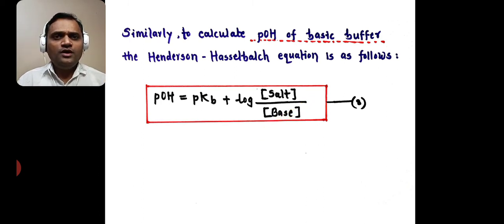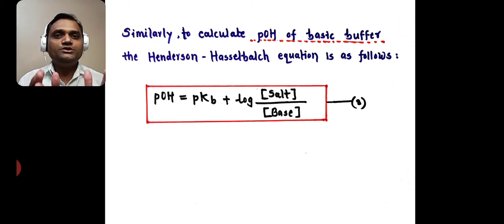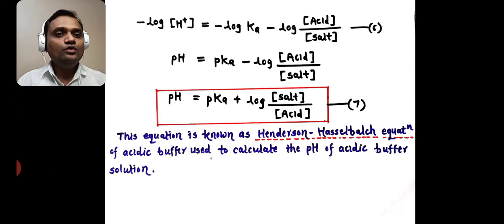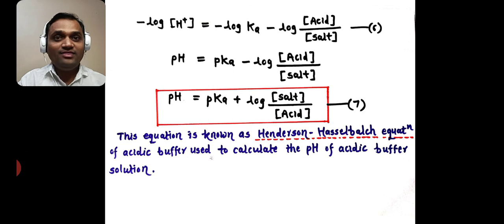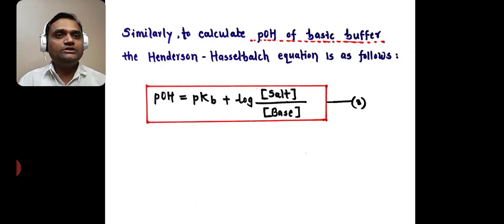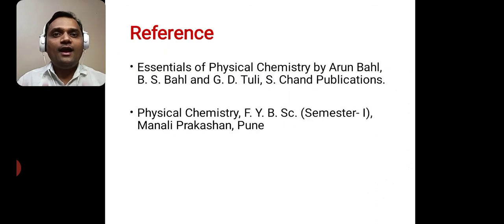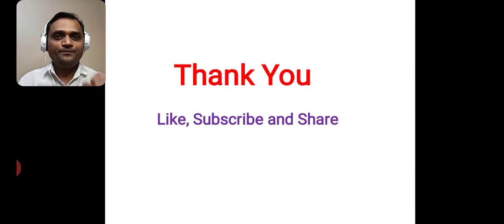So these two are the Henderson-Hasselbalch equations. Equation 7 is used to calculate the pH of an acidic buffer solution, and equation 8 is used to calculate the pOH of a basic buffer solution. This is all about the Henderson-Hasselbalch equation. Thank you.